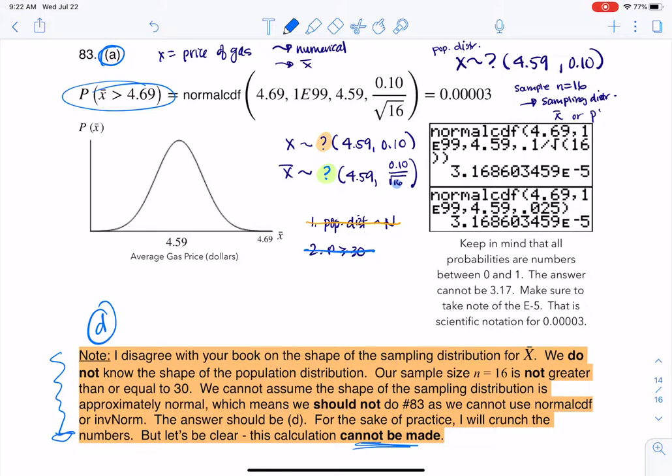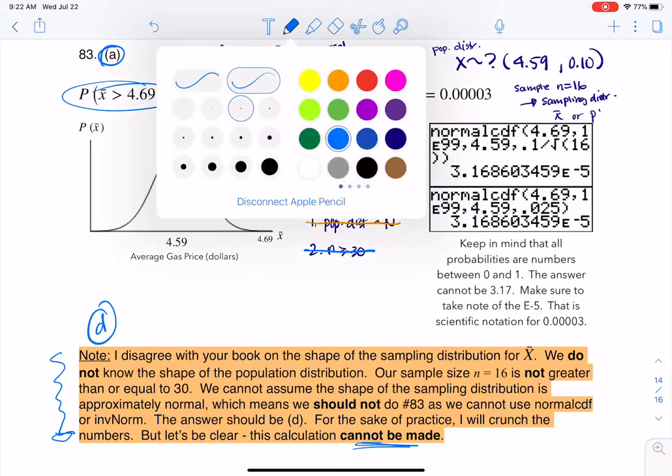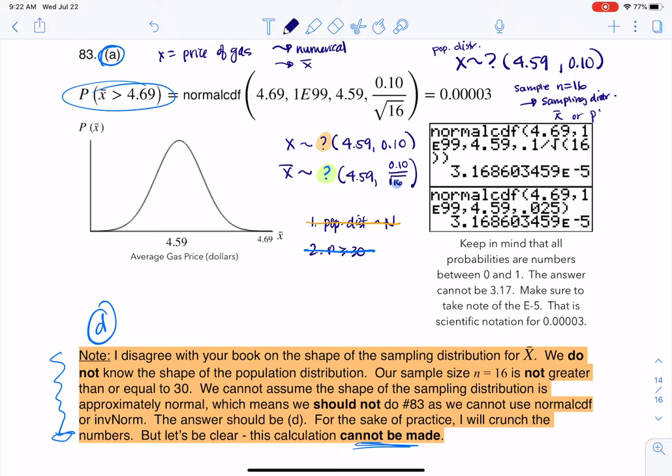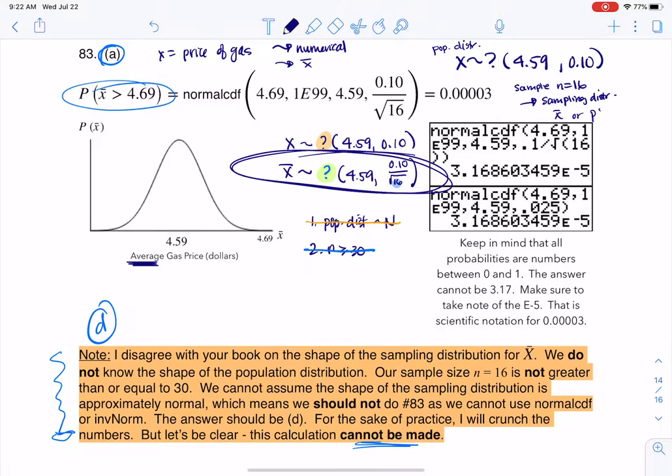If they ask you there, what's the approximate probability that the average price for gas is greater than 4.69? The thing I want you to hear is that they asked about the average gas price. So if they ask you about the average gas price, you got to go with the sampling distribution's numbers.